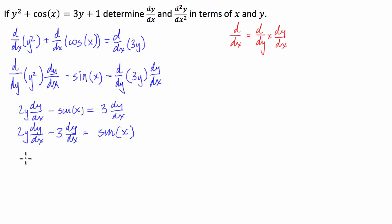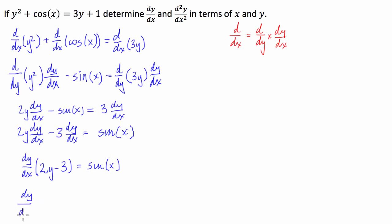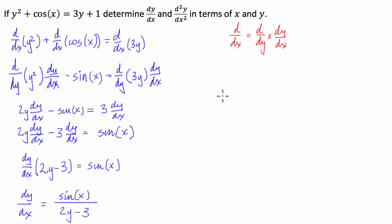I'm going to factorise the left hand side by dy/dx and then divide both sides by (2y minus 3), which leaves me with dy/dx equals sine of x over 2y minus 3. That's our first part of the question done.